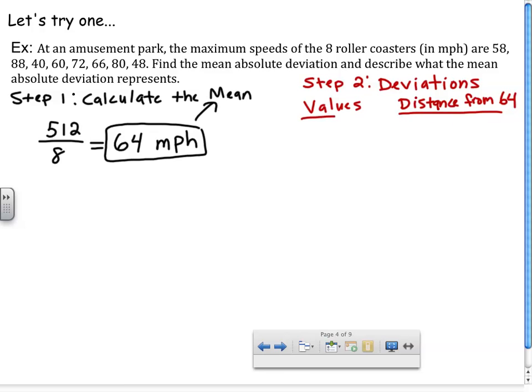So I have my values, and I have my distances from 64. Remember to keep those values positive. So my first value is 58. From 64, that is 6 away. Next I have 88. From 64, that is 24. Next I have 40, which is also 24 away. So you can see, even though 88 and 40 are completely different, they have the same distance from 64.